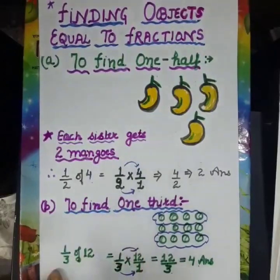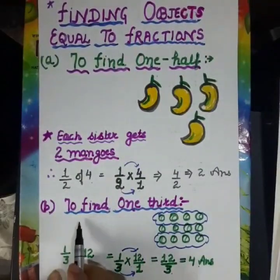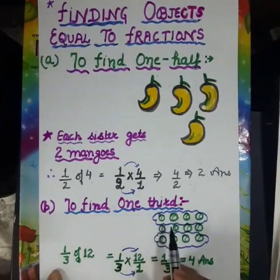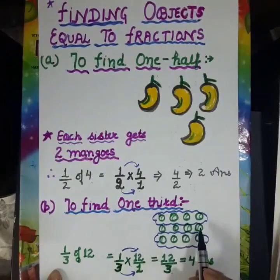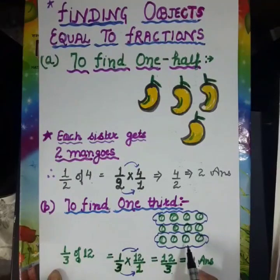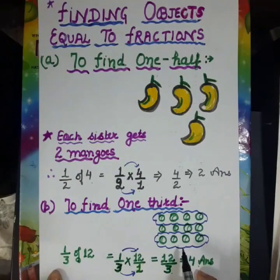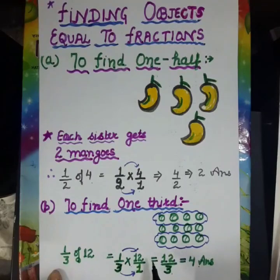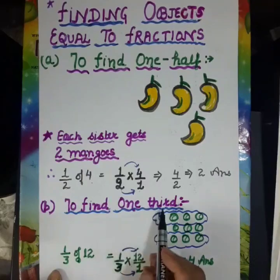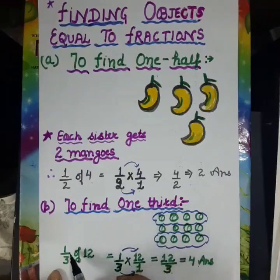In the same way, we will learn how to find 1 third. Here are 12 balls. These balls are divided into 3 equal parts. Each part represents 1 by 3. How many balls are in each part? We can write it as 1 by 3 of 12 balls.